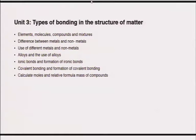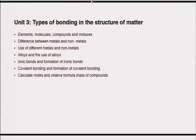Once you have that understanding, you should be able to differentiate between metals and nonmetals and how different metals and nonmetals can be used. The uses of different metals and nonmetals are determined by their chemical and physical properties. You need to understand alloys and the use of alloys, as well as how ionic bonds and covalent bonds are structured and formed, and how to calculate moles and relative mass of compounds.